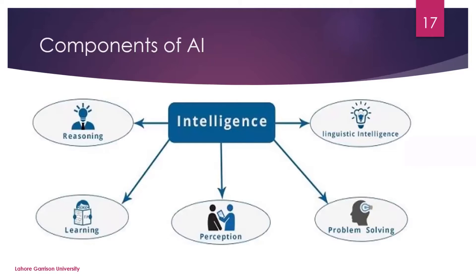Now we talk about the components of artificial intelligence. AI has 5 parts. What are they? Reasoning, learning, perception, problem solving, and linguistic intelligence. These are the 5 parts, and they are all involved in AI.